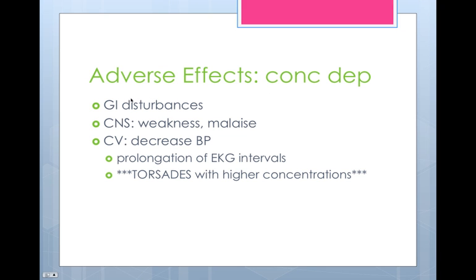Let's talk about those concentration-dependent adverse effects. You're going to have GI disturbances, which we see with pretty much all drugs. You're also going to see CNS effects like weakness and malaise. Cardiovascularly, you're going to see a decrease in blood pressure. It also prolongs the PR interval and can put you at risk for torsades, especially at higher concentrations. This is a big star — with these antiarrhythmics, when you start messing with the electrical system of the heart, you're putting the patient at very high risk for causing arrhythmias, which is not really surprising when you think about it, although worrisome.